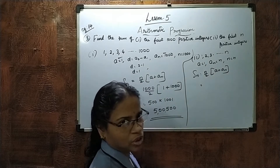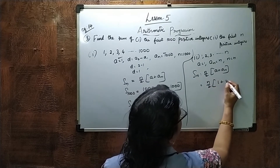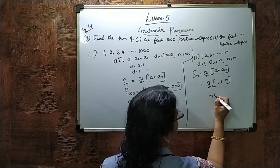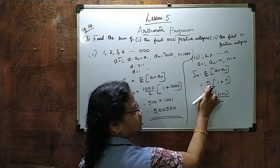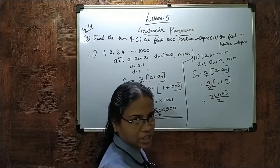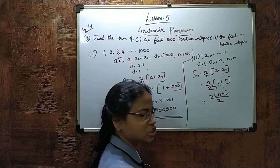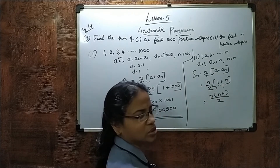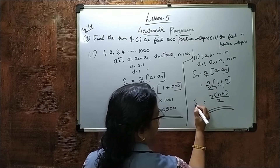Substituting into the formula: Sn equals N by 2 into A plus An, which is N by 2 into 1 plus N. We can also write this as N into (N plus 1) divided by 2. The 2 from N by 2 becomes the denominator, giving us Sn equals N(N+1)/2.